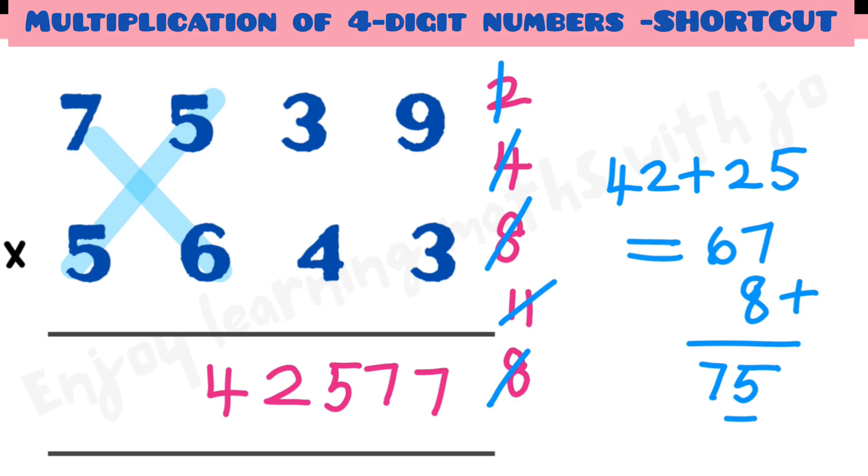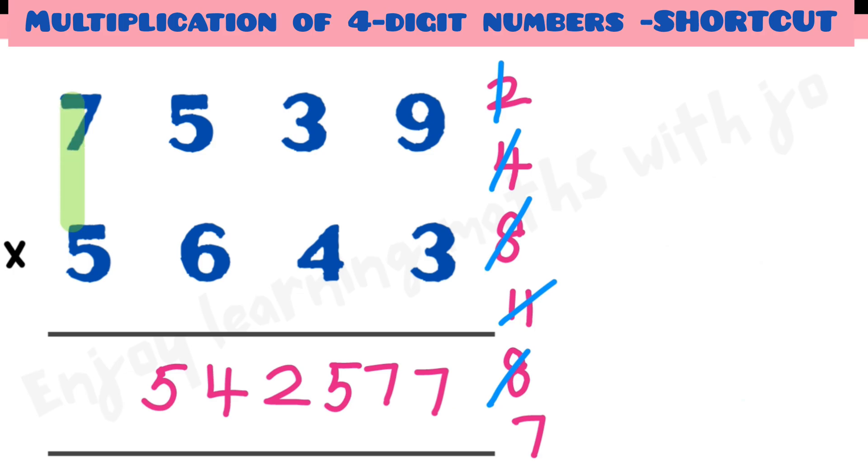So we write 5 here and we have remaining 7. And the last step is 7 times 5 is 35 plus remaining 7 is 42.